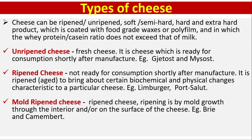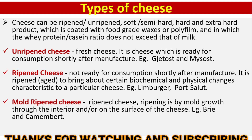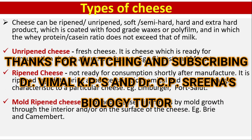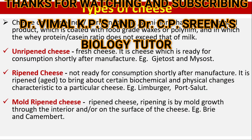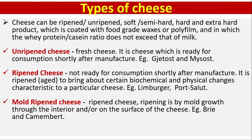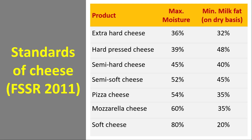Unripened cheese, also called fresh cheese, is cheese which is ready for consumption shortly after manufacture. Examples: cottage cheese and fromage frais. Ripened cheese is not ready for consumption shortly after manufacture; it is ripened or aged to bring about certain biochemical and physical changes. Example: Limburger, Port Salut. Mold-ripened cheese: ripening is by mold growth through the interior and/or on the surface. Example: Brie and Camembert.